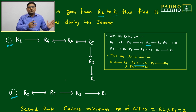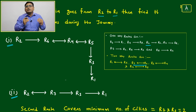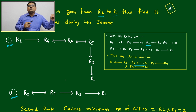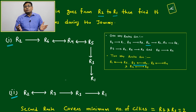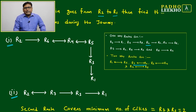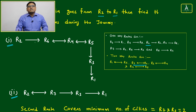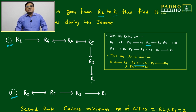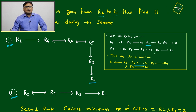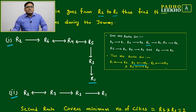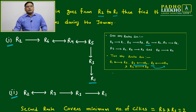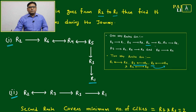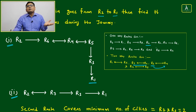For example, if you start from R2 and reach R6 but then get trapped in a deadlock and cannot reach R1, that route is not valid. So we need to elaborate all possibilities to reach R1. From R2 to R6, we look at R6's options: the only option from R6 is to go to R4.